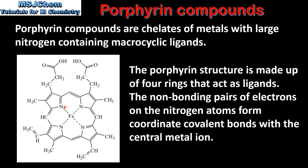Each nitrogen atom has a non-bonding pair of electrons which form coordinate covalent bonds with the central metal ion, which in heme is the Fe²⁺ ion.